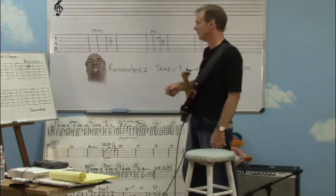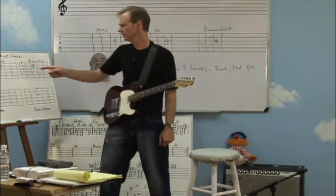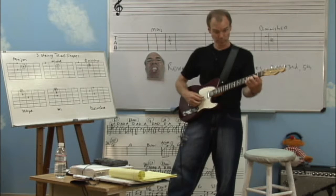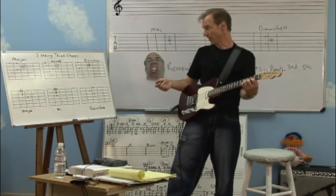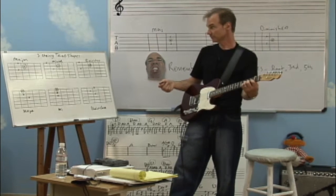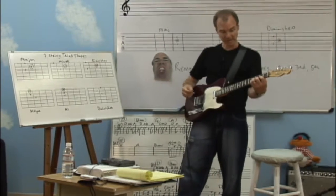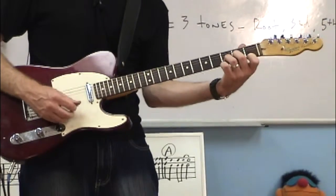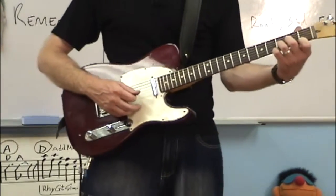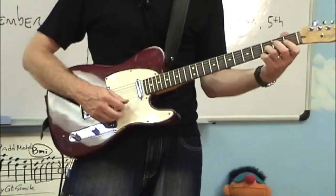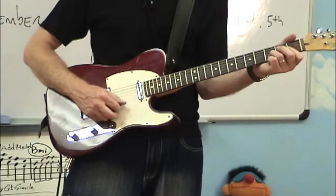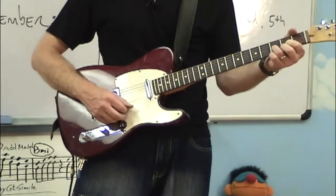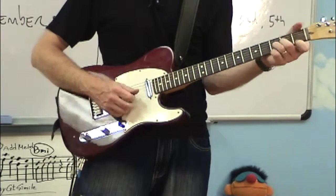So let's review the triads we've learned. We've learned the triad inversion that has the fifth on the bottom, the root in the middle, and the third on top. And we've learned how to make that a minor triad by bringing the third down. We might have even learned a diminished triad by bringing the fifth down a half step. So we've got a cool major sound, a minor sound, and even a diminished sound.